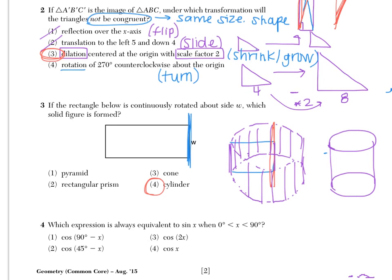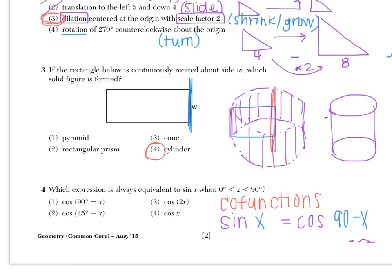Number four says, which expression is always equivalent to sine of x when x is between 0 degrees and 90 degrees? This is something called co-functions. It's just something that you have to memorize. There's no real good trick for it. Except for the fact that you always have a sine and you always have it equal to a cosine. So if we're talking about sine of x, then cosine needs to be 90 minus x. Because the two values, sine and cosine together, should sum to 90 degrees.